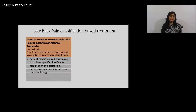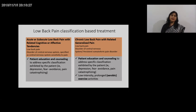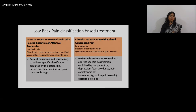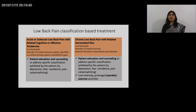The next two categories are sub-acute and chronic low back pain with cognitive and affective tendencies, and chronic low back pain with relatively generalized pain. The main intervention here is pain education and counseling. You also need to address the specific classification — if the patient has depression, it must be treated.